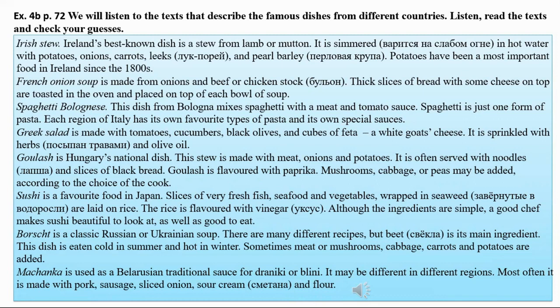Potatoes have been a most important food in Ireland since the 1800s. French onion soup is made of onions and beef or chicken stock. Thick slices of bread with some cheese on top are toasted in the oven and placed on top of each bowl of soup.